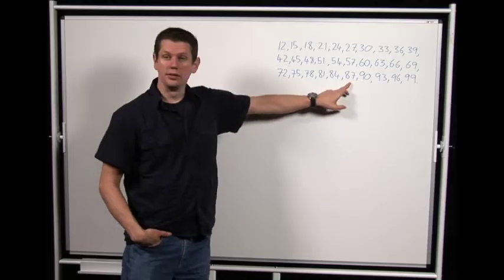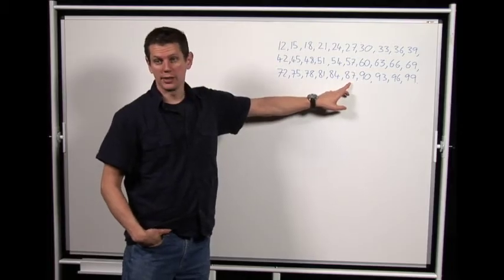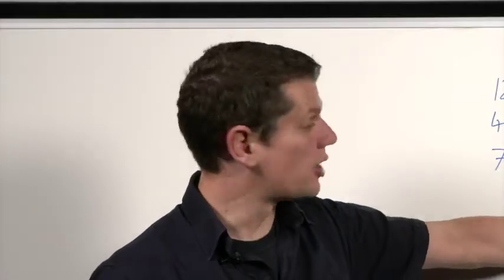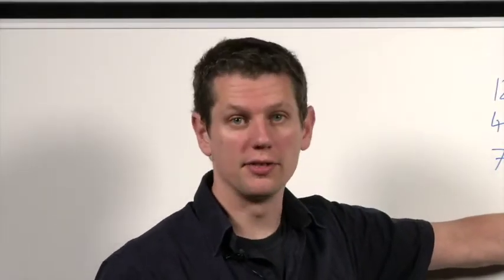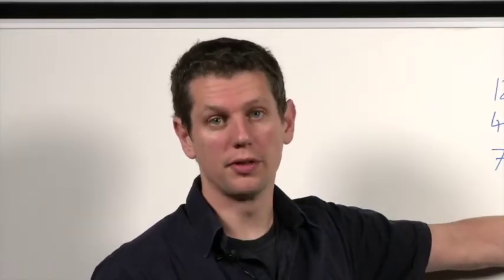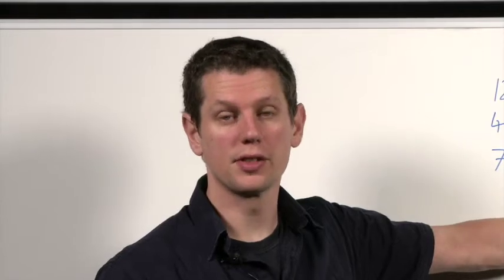For example, 87 is a multiple of 3 because it's 3 times 29. Its digits are 8 and 7, and 8 plus 7 is 15, and that's a multiple of 3 too, because it's 3 times 5.